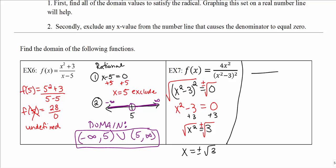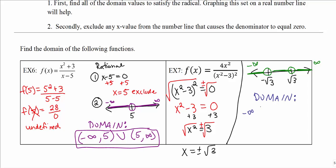To write the domain, we put open circles at negative √3 and positive √3 on the number line, and highlight everything around and in between. The domain is from negative infinity to negative √3, excluding negative √3, union from negative √3 to positive √3, excluding both endpoints, union from positive √3 to positive infinity, excluding positive √3. This gives (−∞, −√3) ∪ (−√3, √3) ∪ (√3, +∞).